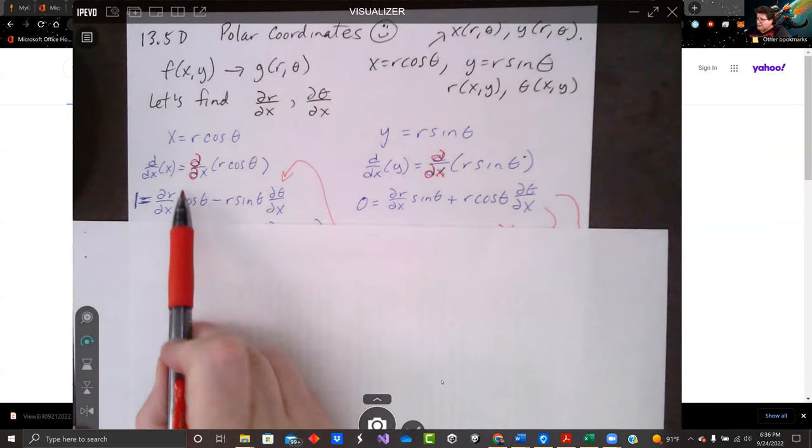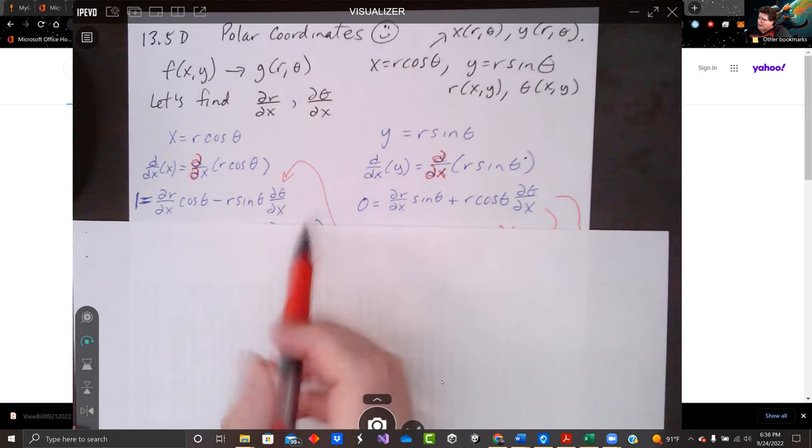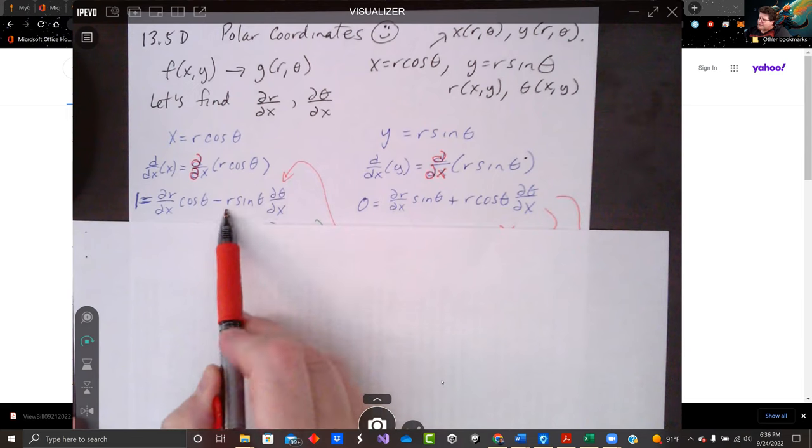Just remember to do a product rule. So I've got the derivative of the first, leave the second alone. Then leave the first alone, take the derivative of the second. Sine theta, d theta dx is cosine theta.